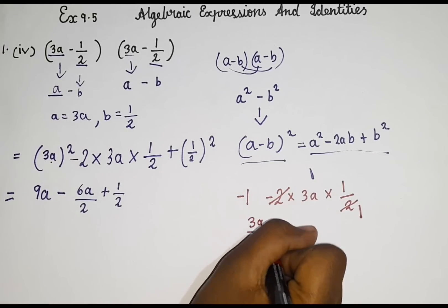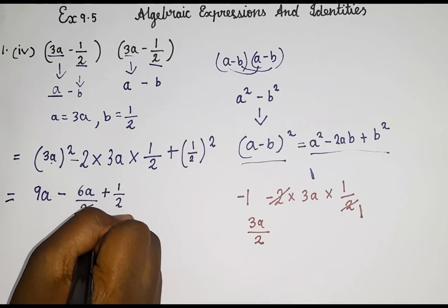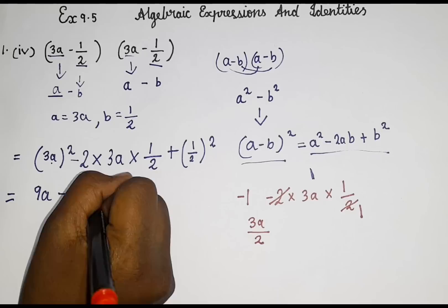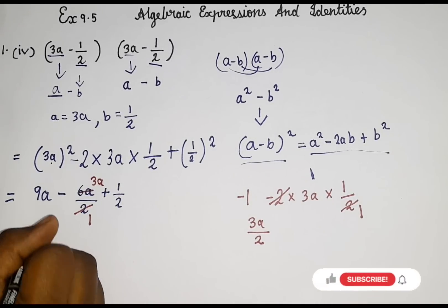So now 3 into 1 is 3. And 3a by 2. So we can write it like this. Or 2 1s are 2. 2 3s are 6. So here you can see we got the answer in this way too.